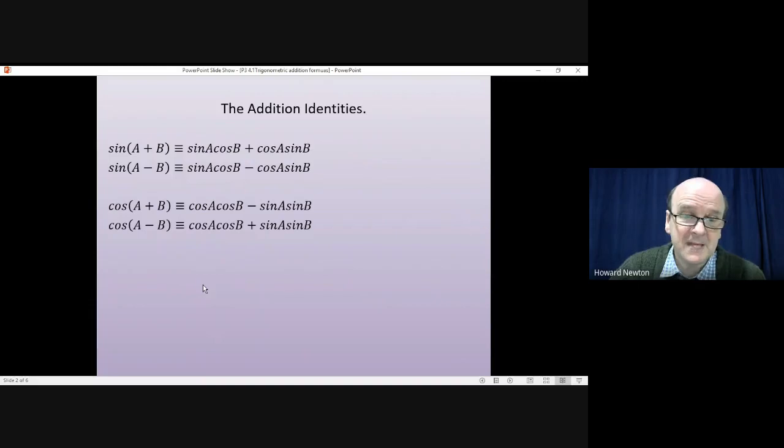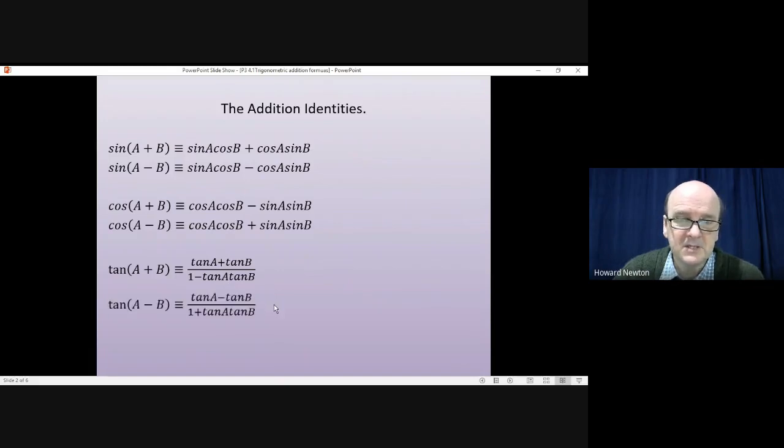The formulae for tan are a little bit more complicated. The tangent of two angles added together, tan(A + B) is the same as tan A plus tan B all divided by one take away tan A tan B. And if you have the tangent of one angle take away another one, it's the same formula but the signs swap over. So the plus changes to minus on the top, and the minus changes to plus.